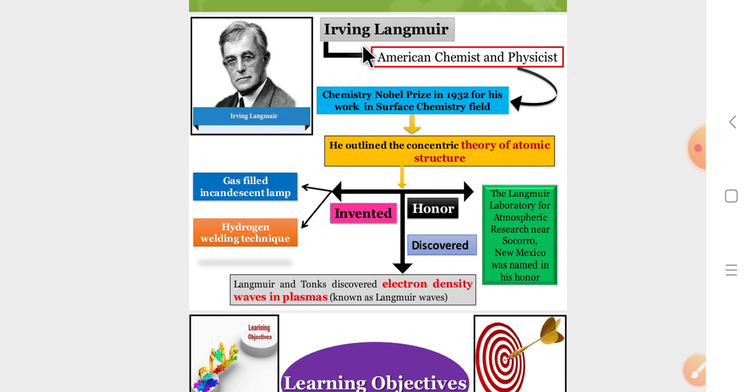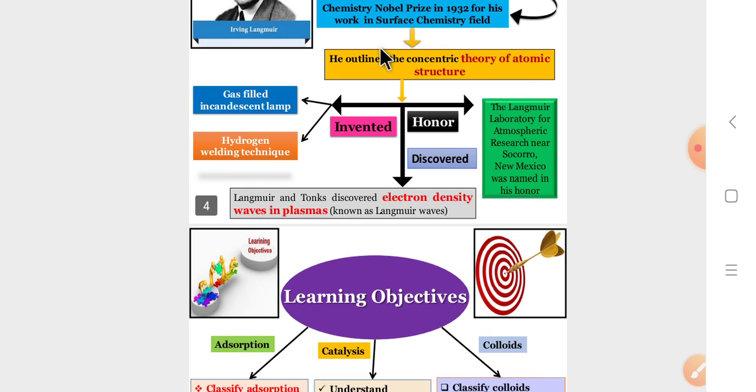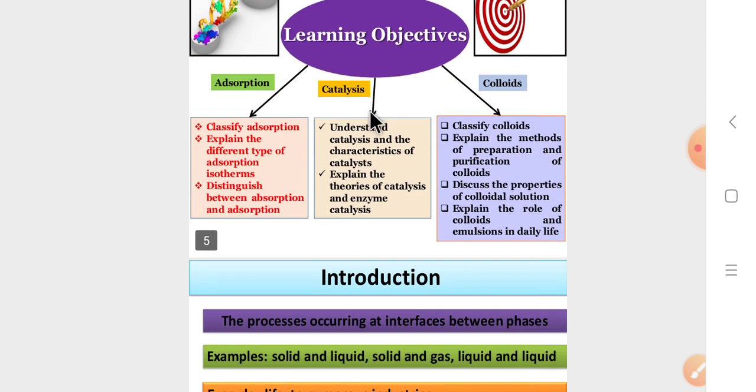He is an American chemist and physicist. He got the Nobel Prize in the year 1932 for his work in the surface chemistry field, having been awarded so many Nobel Prizes. Next, what are the learning objectives from this lesson?